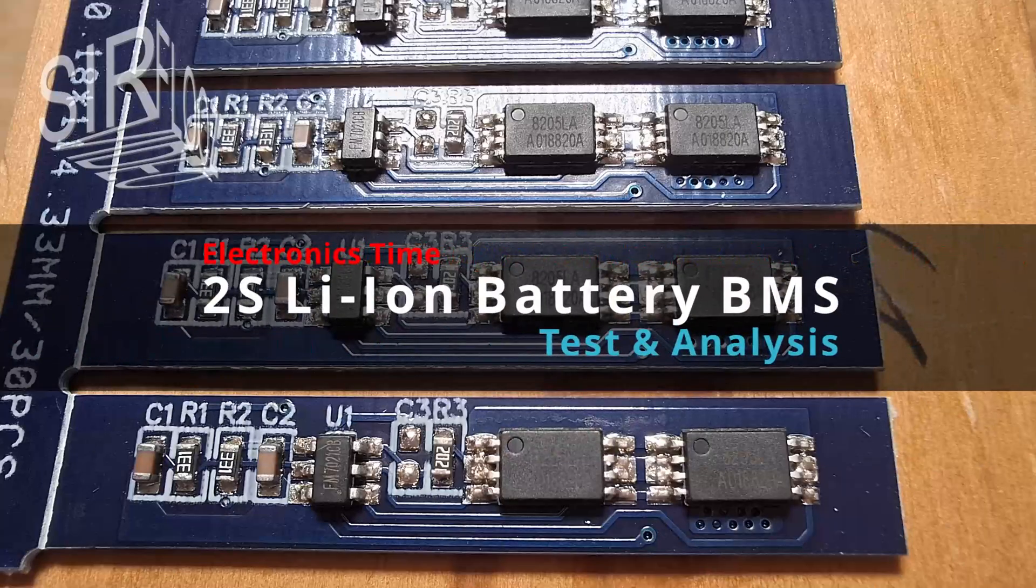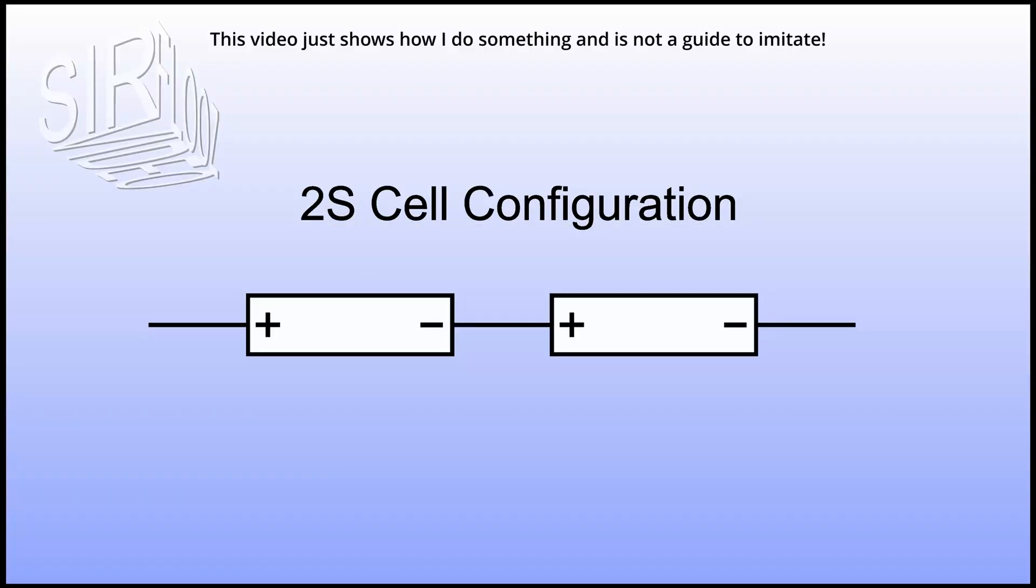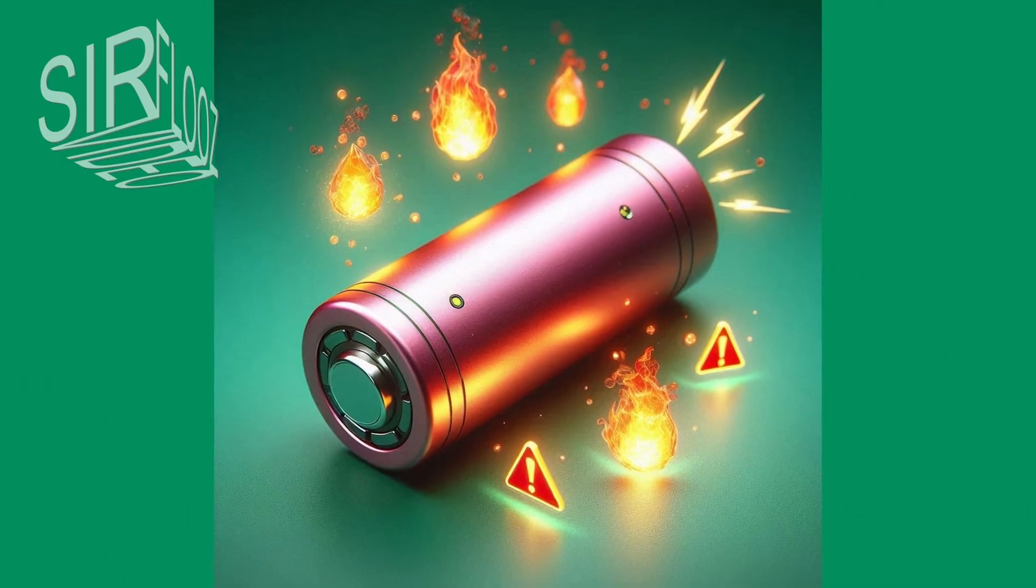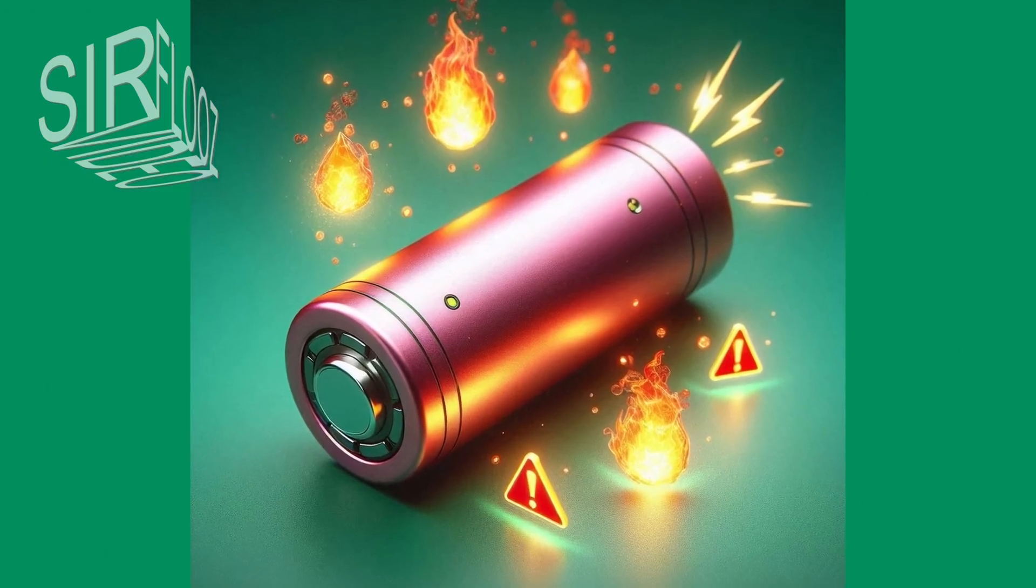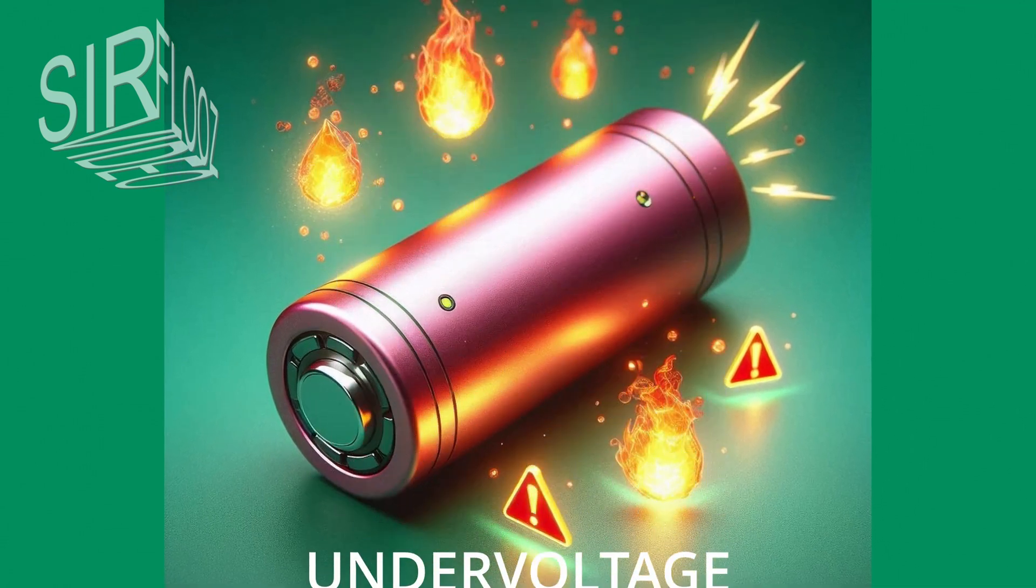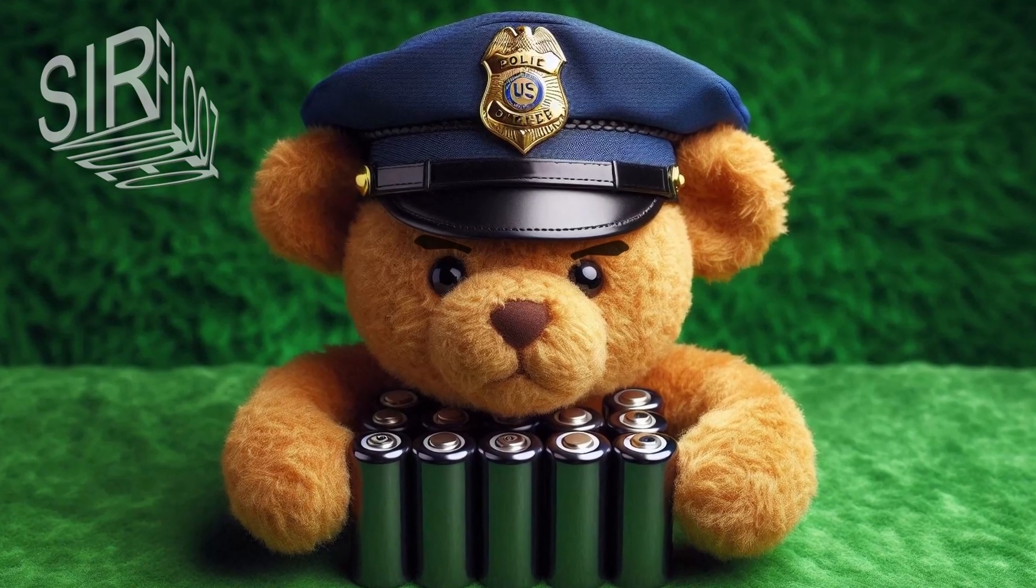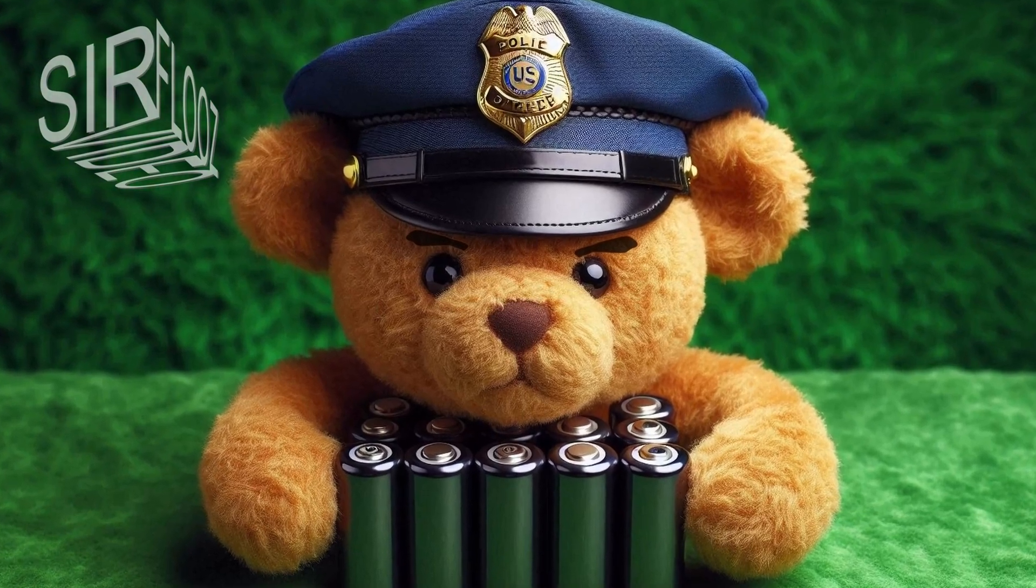Hi guys, for my project I need a protection board for 2S lithium-ion batteries. 2S means that two battery cells are electrically connected in series. Since lithium-ion batteries are relatively sensitive to overcharging, under voltage, and excessive charging or load currents, and the batteries may not be charged in a balanced manner, the individual cells must be protected from this.